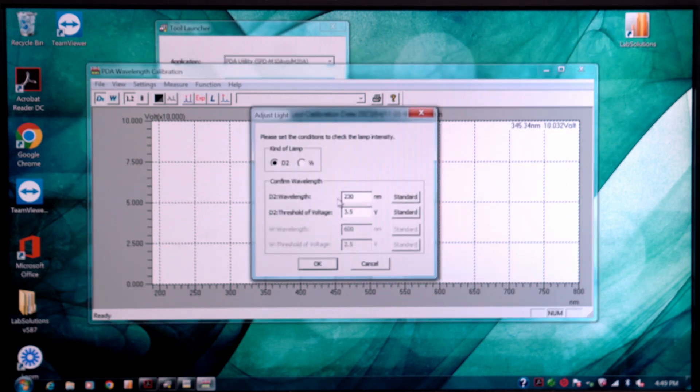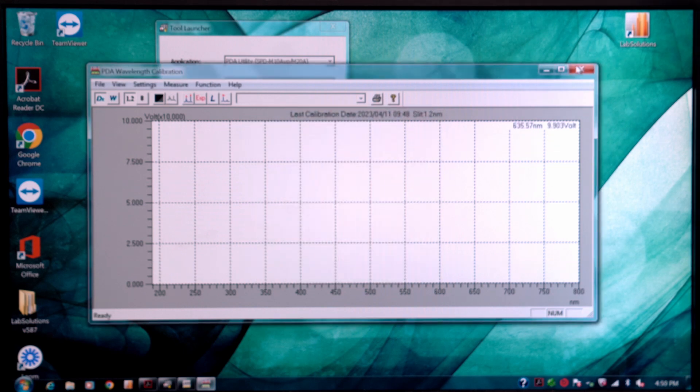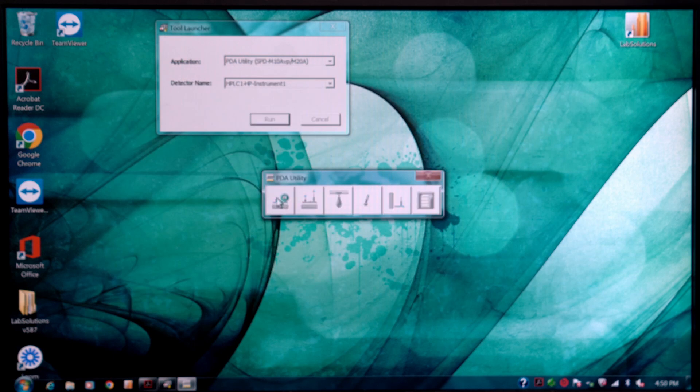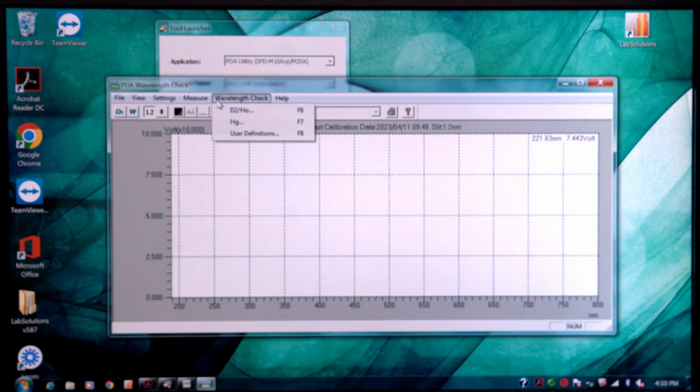The next thing you want to do is to check that the D2 wavelength is 230.35 and the tungsten is 602.5. And if they're not, then change it to these values. And then after that's done, you want to go back and perform the wavelength check again. And then if everything passes, you're good to go.